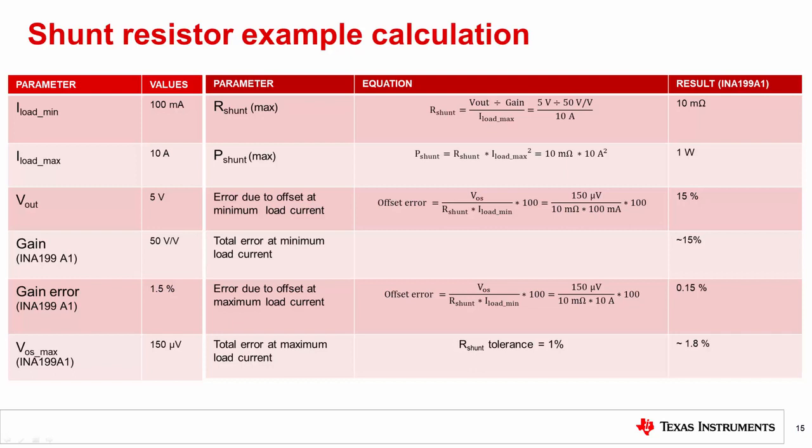Using the equations we introduced earlier, the maximum R_shunt is calculated to be 10 milliohms. The 10 milliohm shunt resistor will dissipate 1 watt of power at 10 amps and error due to offset at 100 milliamps of current is 15%. Offset voltage contribution to error at maximum current is 0.15%. But at the full-scale input, there are other error sources like amplifier gain error and shunt resistor tolerance error that dominate.